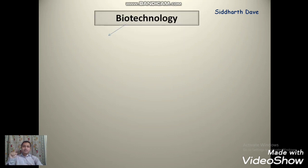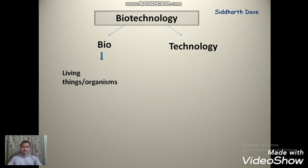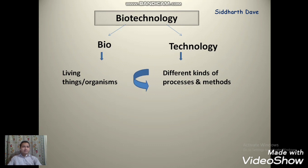First of all, we need to learn what is biotechnology. When you see the word, it consists of two words: the first word is 'bio' and the second word is 'technology'. Bio means living things or organisms, and technology simply means different kinds of processes and methods. So when you apply all these processes and methods on living organisms, it becomes biotechnology.